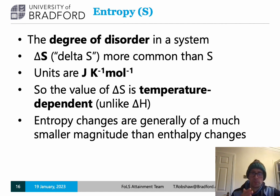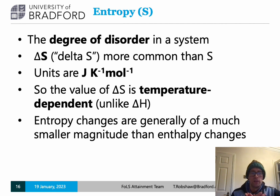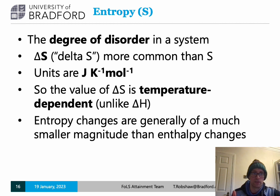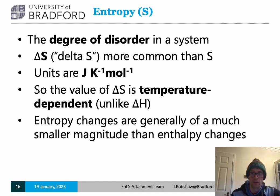A tip for assessment situations: if you've done an entropy calculation based on enthalpy data and the value that comes out is in the thousands of joules per kelvin per mole — bigger than the associated enthalpy values — you've probably done something wrong. Entropy values are generally at least one order of magnitude lower than enthalpy values.